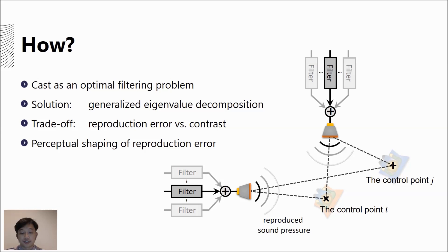To calculate these filters, we have to compute generalized eigenvalue decomposition first. Then the filter tries to do two things at the same time: first, it maximizes the contrast between two zones; second, it minimizes the distortion or reproduction error in the two zones. This approach is very flexible, so we can cooperate with perceptual audio coding so that the reproduction error can be shaped perceptually.